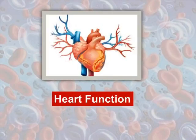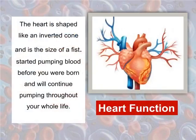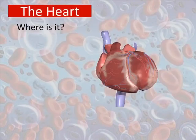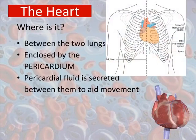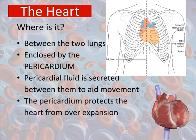The heart is shaped like an inverted cone and is the size of a fist. It started pumping blood before you were born and will continue pumping throughout your whole life. It is located between the two lungs, enclosed by the pericardium. Pericardial fluid is secreted between them to aid movement, and the pericardium protects the heart from overexpansion.